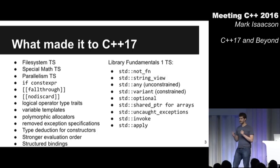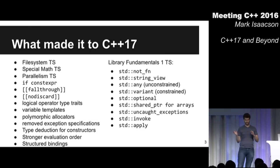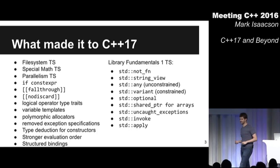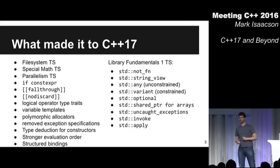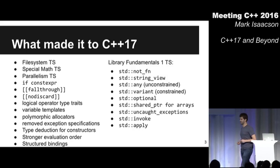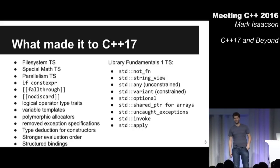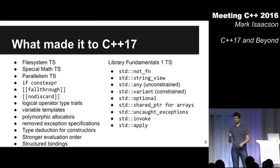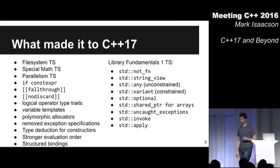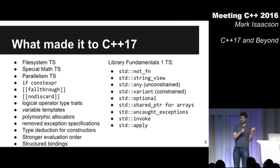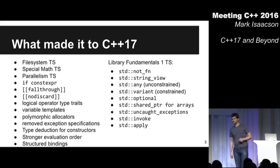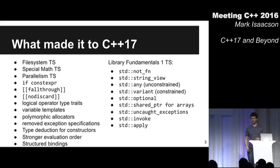So what made it into C++17: file system TS — things like file permissions, does a file exist, grouping paths. We've got special math: Legendre polynomials, Bessel functions. Parallelism — new overloads of the entire algorithm header, where you can say run in parallel or run vectorized. We've got if constexpr, fall through for switch statements — an annotation that says yes, I really did mean to do that. No discard — another annotation that helps you prevent silly bugs.